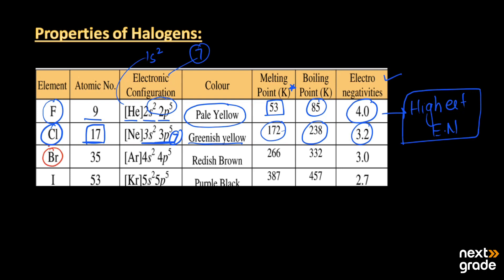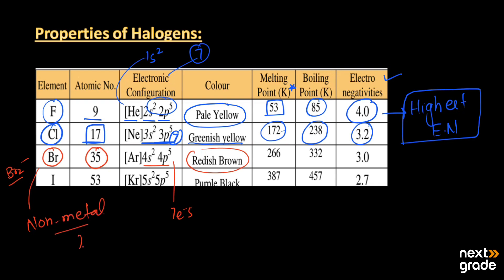The third element is bromine, which exists in the form of Br2. Its atomic number is 35, and its valence shell again contains 7 electrons. Its color is reddish brown — notably, bromine is the only non-metal that exists in the liquid state. Its melting point is 266 K, its boiling point is 332 K, and its electronegativity is 3.0.